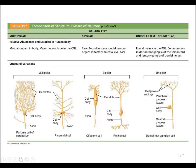Bipolar neurons are only found in some special sense organs, such as the nose for smell, the eyes for light, and the ear for sound. If you look at the cell body, you'll see two poles or two extensions — one on each side — so we call these bipolar neurons. They are not found throughout the body, just localized to these special sensory organs. Unipolar neurons have only one extension coming off the cell body and are found in nerves bringing information into the spinal cord — these are sensory neurons on the afferent pathway. Unipolar neurons are more common than bipolar, but multipolar remains the most common overall.